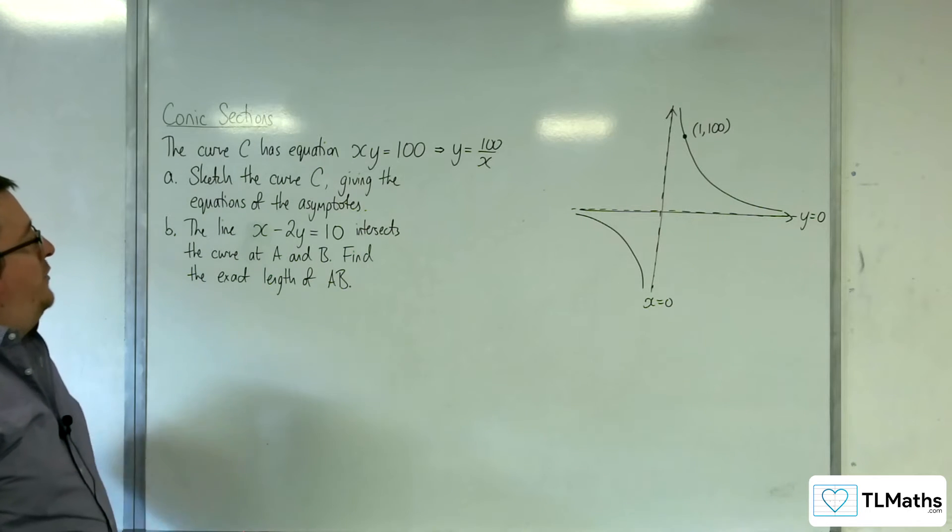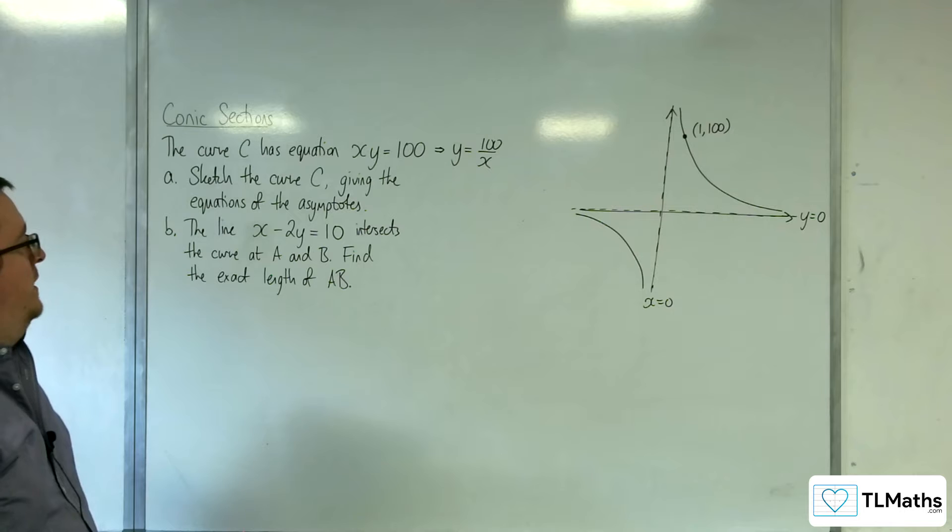Now, the line x take away 2y equals 10 intersects the curve at A and B. Find the exact length of AB.